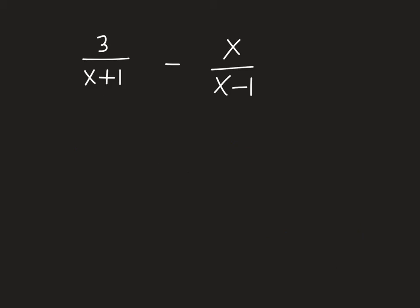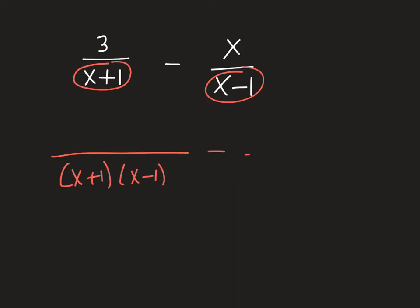So here is our problem. Let's say we have 3 over (x plus 1) minus x over (x minus 1). Again, to add or subtract we need a common denominator, so I'm looking down at the denominators first. In this case neither one is factorable — they're both just two separate things, their own factors. So what we're going to do is use both of them: we're going to use the product of them both as the common denominator, because they didn't have anything in common. It's exactly what we did in the previous problem. So we're going to use x plus 1 times x minus 1.